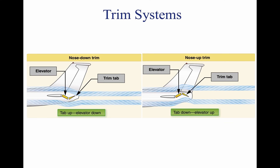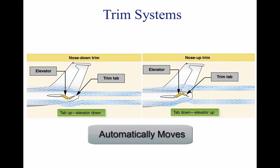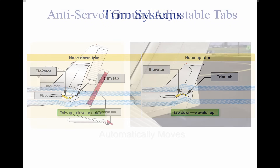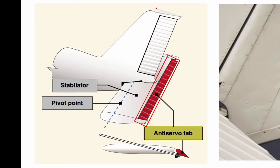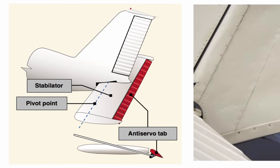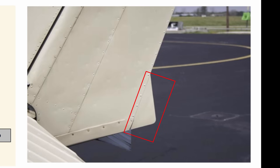Shown above is a balance tab, which automatically moves opposite the control input to relieve some of the pressure required to be held by the pilot. The linkage of the flight controls and the tab is controllable from the flight deck. Anti-servo tabs, pictured on the left, work similarly to balance tabs by opposing the force of the pilot and making the stabilizer less sensitive. Ground adjustable tabs, seen on the right, can be adjusted from the ground and stop the aircraft from skidding left or right during cruising flight.